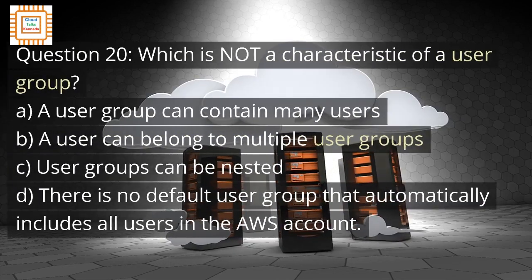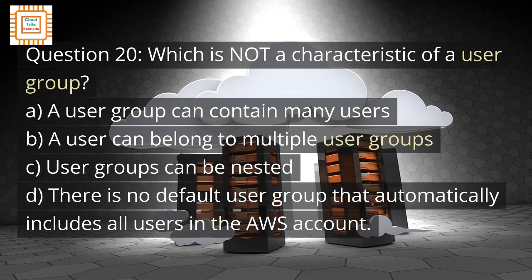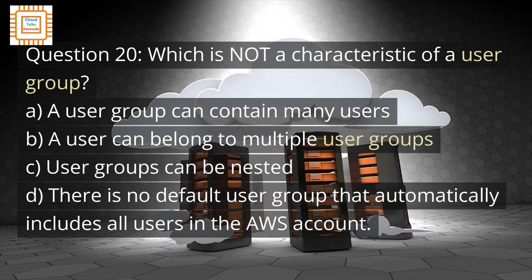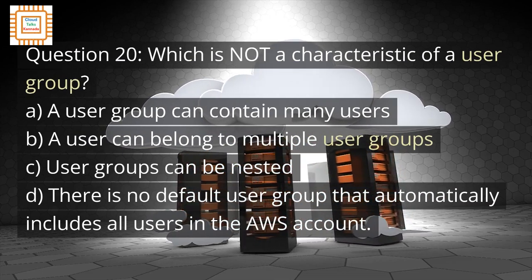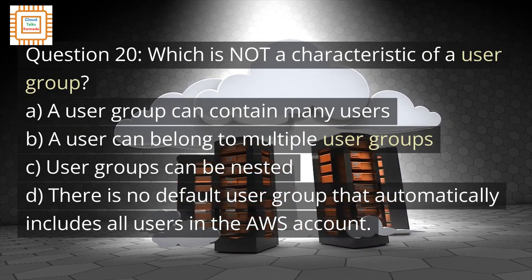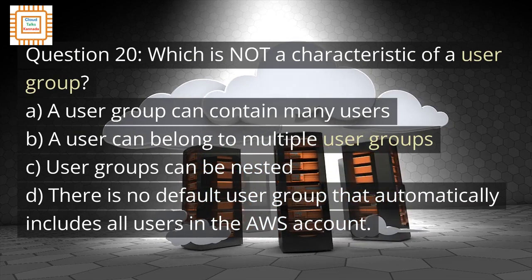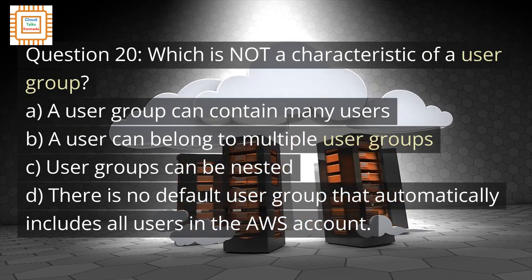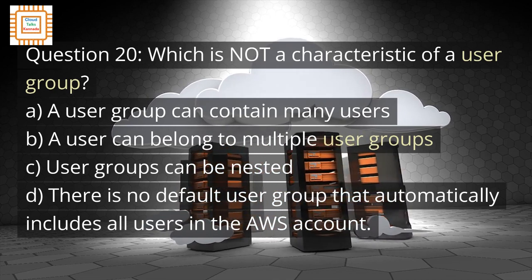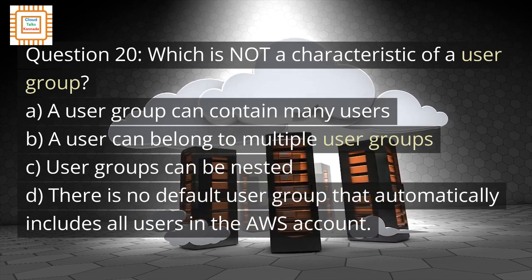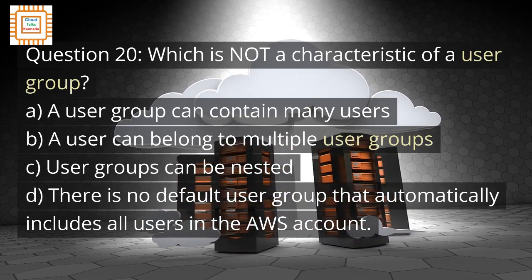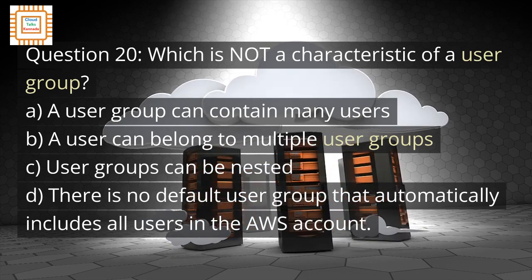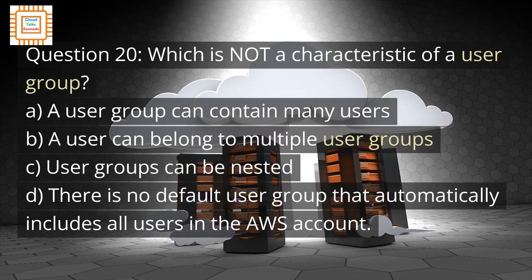Question 20: Which is not a characteristic of a user group? A. A user group can contain many users. B. A user can belong to multiple user groups. C. User groups can be nested. D. There is no default user group that automatically includes all users in the AWS account.